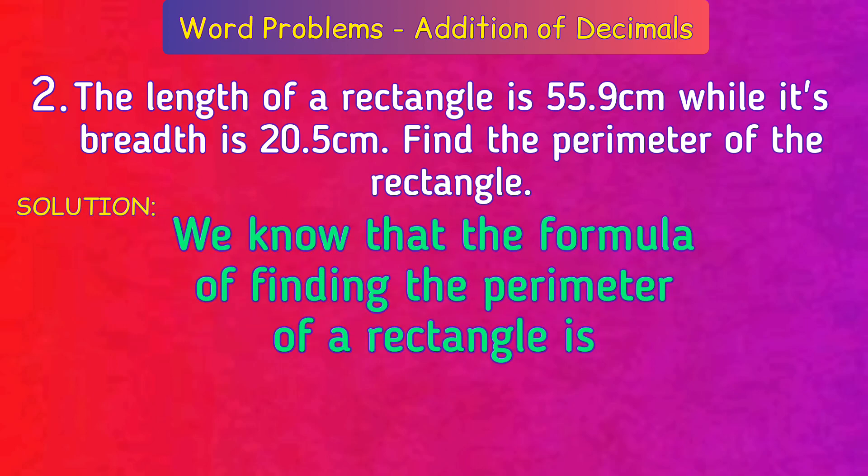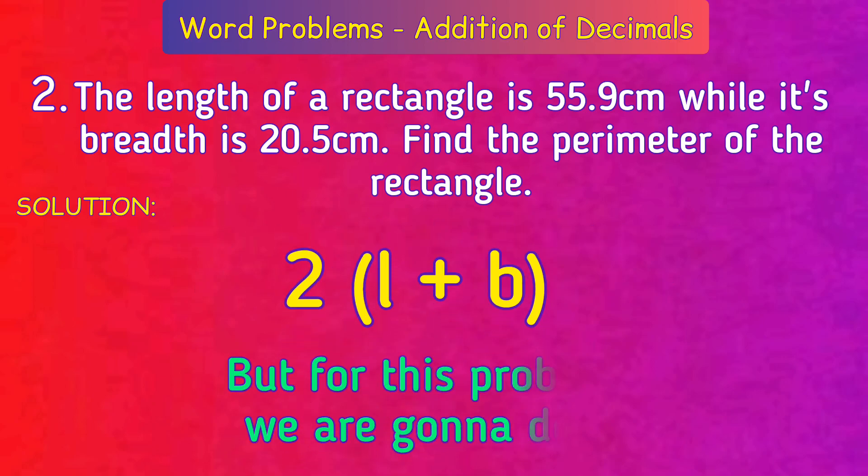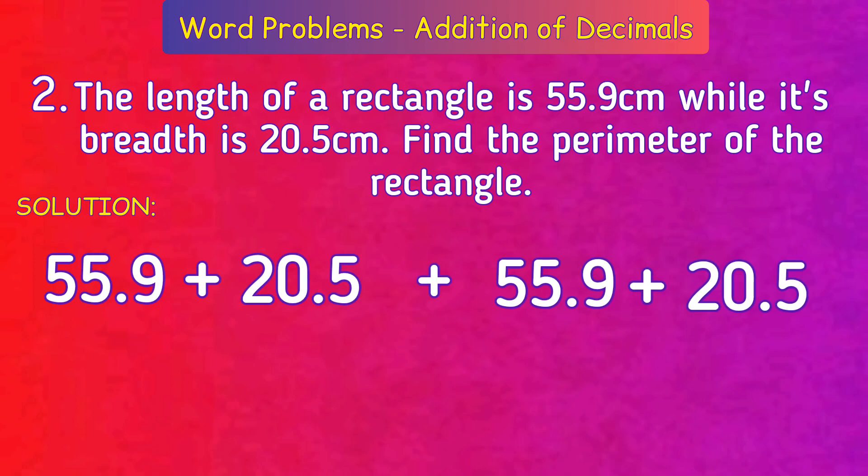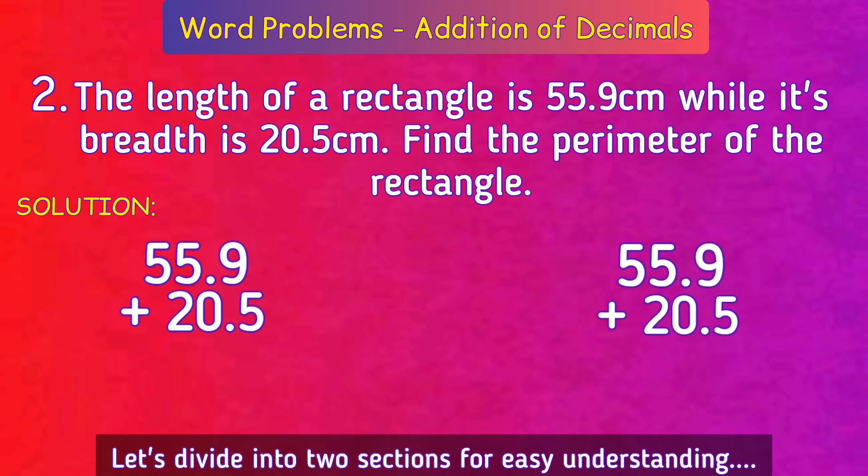Solution: We know that the formula for finding the perimeter of a rectangle is 2(l + b), but for this problem we're gonna do l + b + l + b. Length is equal to 55.9 centimeters, breadth is equal to 20.5 centimeters. So 55.9 plus 20.5 plus 55.9 plus 20.5 gives the answer. Let's divide into two sections for easy understanding.